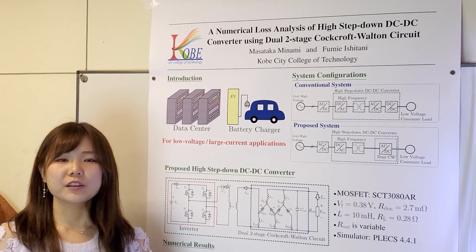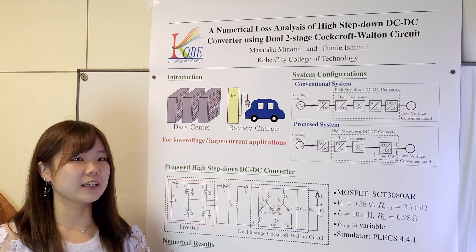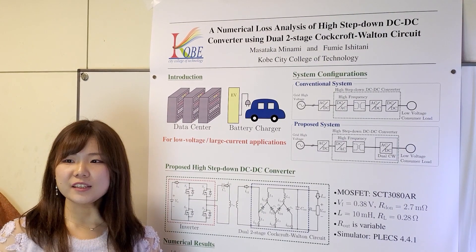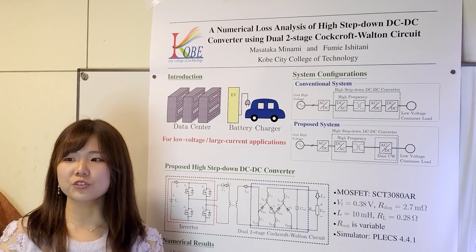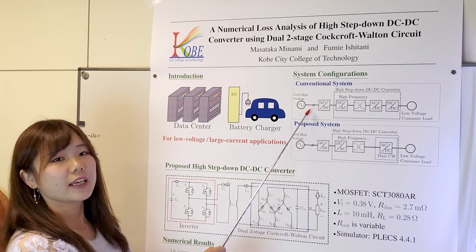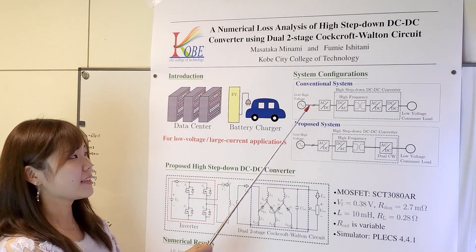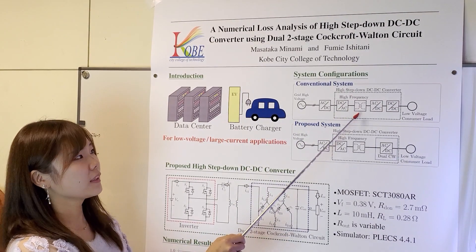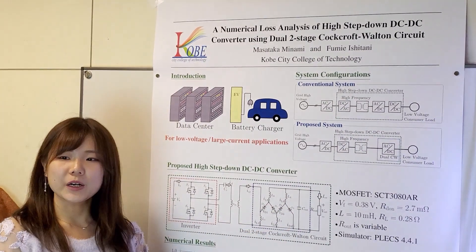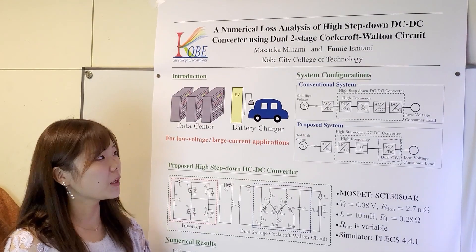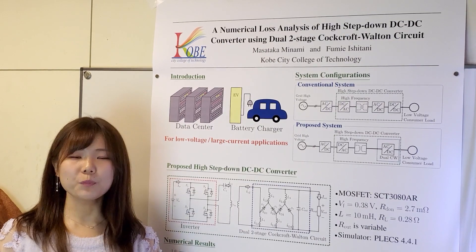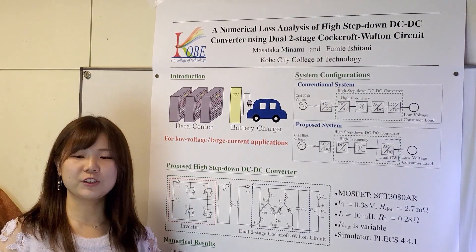In order to supply electric power to low-voltage and large-current applications from power-grid system, it is necessary to use multi-stage connection transformer like this conventional system. In this conventional system, there are inverter, transformer, rectifier, and DC-DC converter. However, multiple transformer makes lots of loss by active components and it causes lower efficiency.